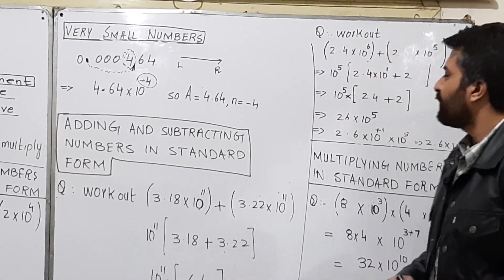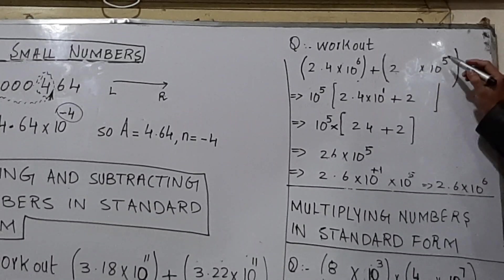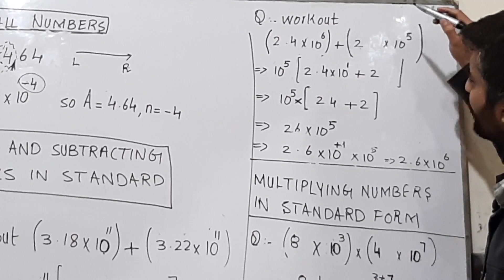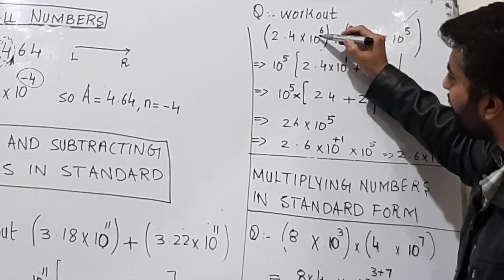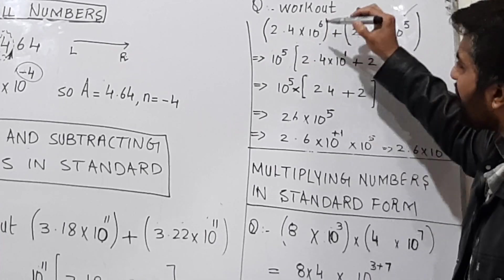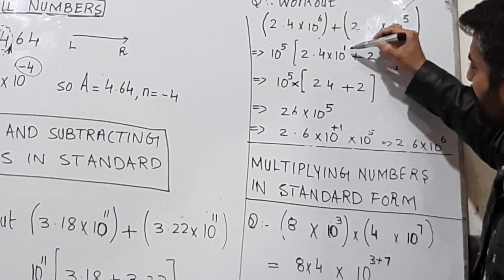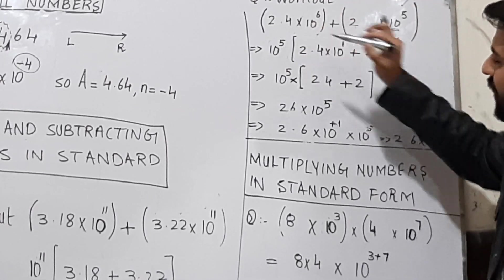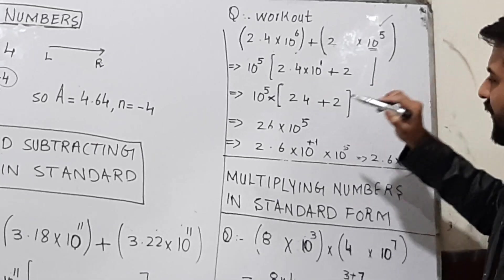The next example is addition with different powers: 2.4 × 10⁶ + 2 × 10⁵. Since the powers are different, take the smaller power, 10⁵, as the common factor. You are left with (2.4 × 10¹ + 2) × 10⁵. Solving inside the bracket: 2.4 × 10 is 24, and adding 2 gives 26 × 10⁵.